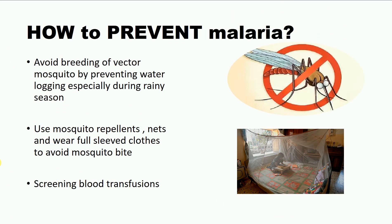The most important way of preventing malaria is by avoiding the breeding of the vector mosquito by preventing water logging, especially during rainy season — not letting fresh water collect in tires, drains, and pools, which serve as breeding grounds for mosquitoes. Also, avoid mosquito bites by using mosquito repellents, mosquito repellent nets, sprays, and wearing full-sleeved clothes, especially during rainy season. Additionally, blood transfusions should be completely screened because malaria is a blood-borne disease and can spread if the blood of an infected individual is transfused into a healthy human being.